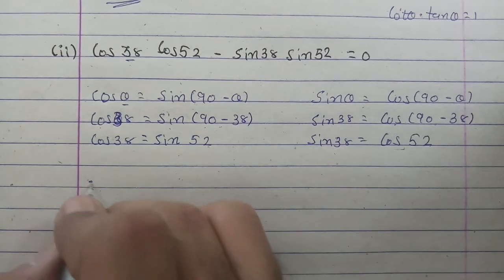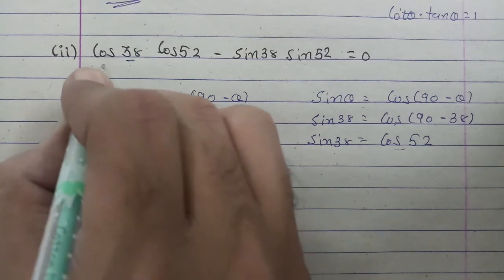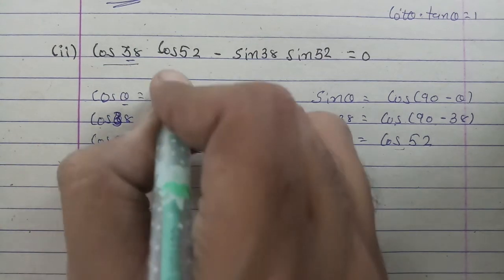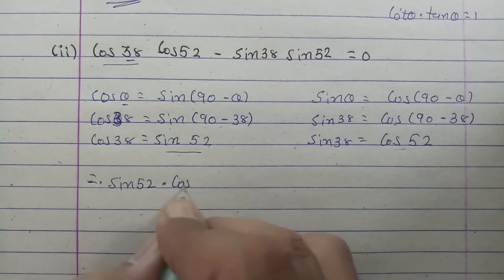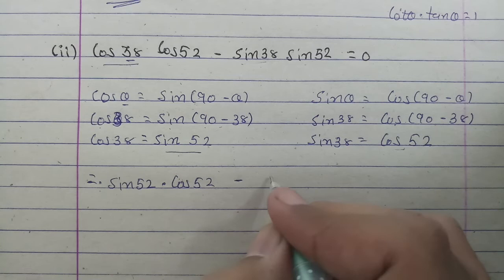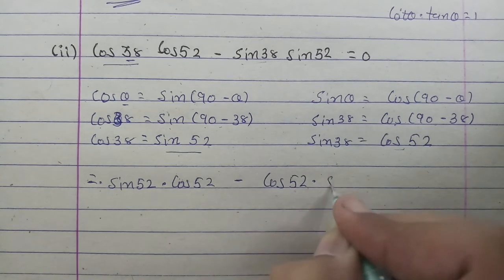So from this, in place of cos 38° we'll write sin 52°, and cos 52° as it is, minus in place of sin 38° we'll write cos 52°, and sin 52° remains as it is.